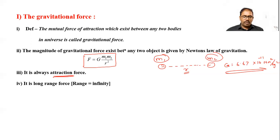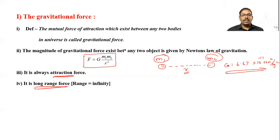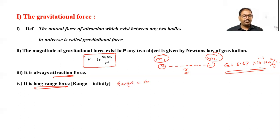Gravitational force is a long-range force — we cannot decide up to what distance it is effective. For example, the Sun and Earth are at a very large distance, yet gravitational force of the Sun acts on Earth, and beyond that distance it acts on other planets too. We cannot set a limit, so we say the range is infinite. Also, gravitational force does not require the presence of an intervening medium.